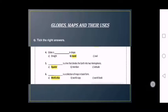Question: tick the right answers. Number 4. Globe is dash in shape. Option A, Straight. Option B, Round. Option C, Oval. The right answer is Round.